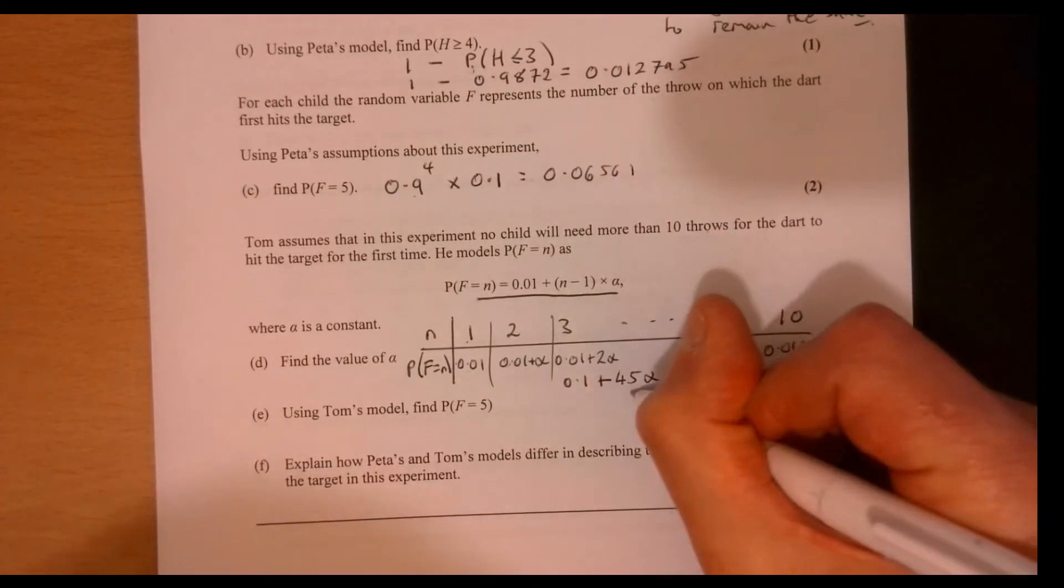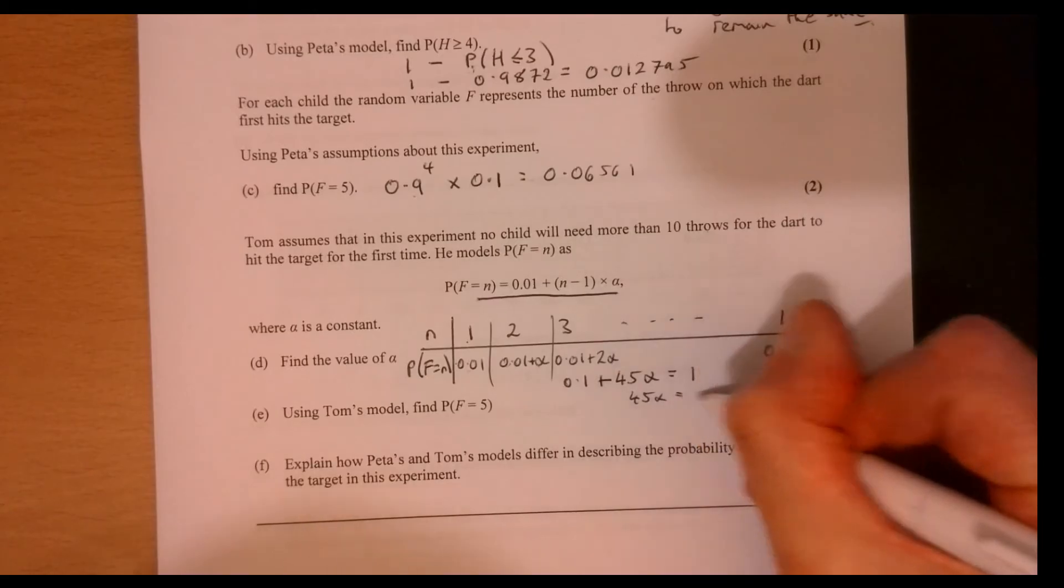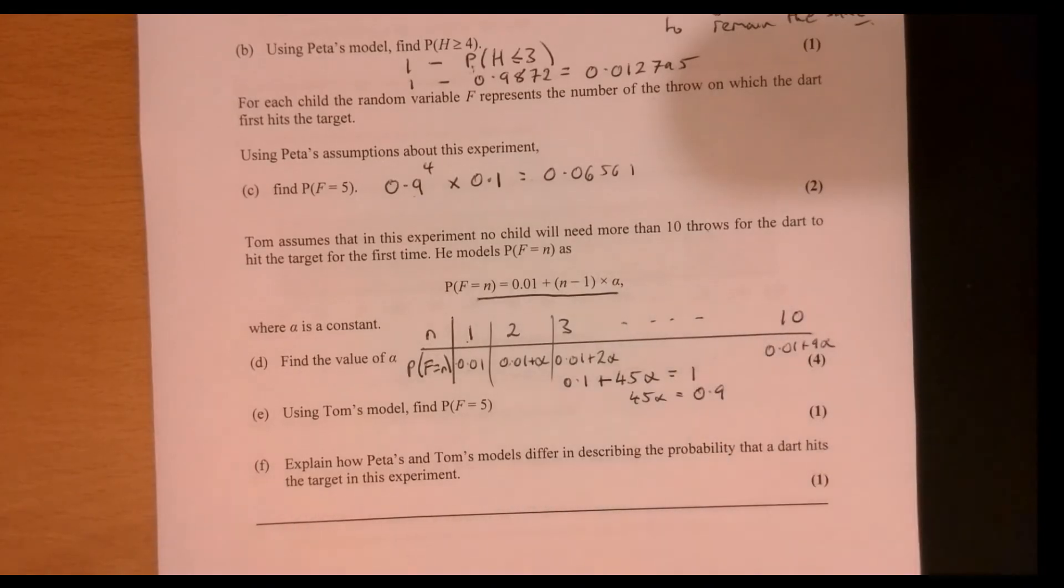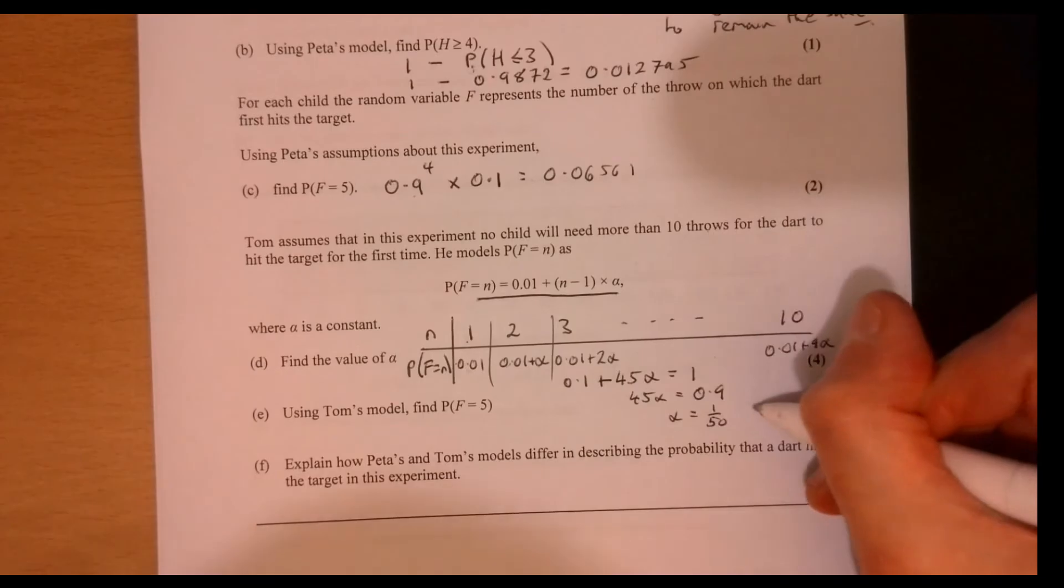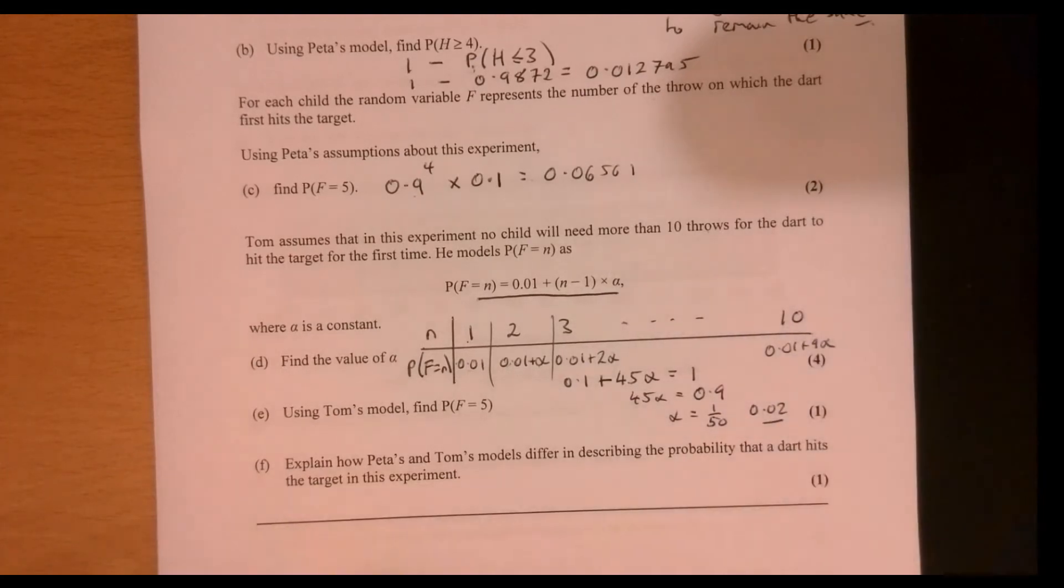And that's got to equal 1. Take away 0.1 from both sides. So 45 alpha equals 0.9. Divide by the 45. And we get this figure 1 over 50. Or if you prefer to write it as a decimal, we've got 0.02.